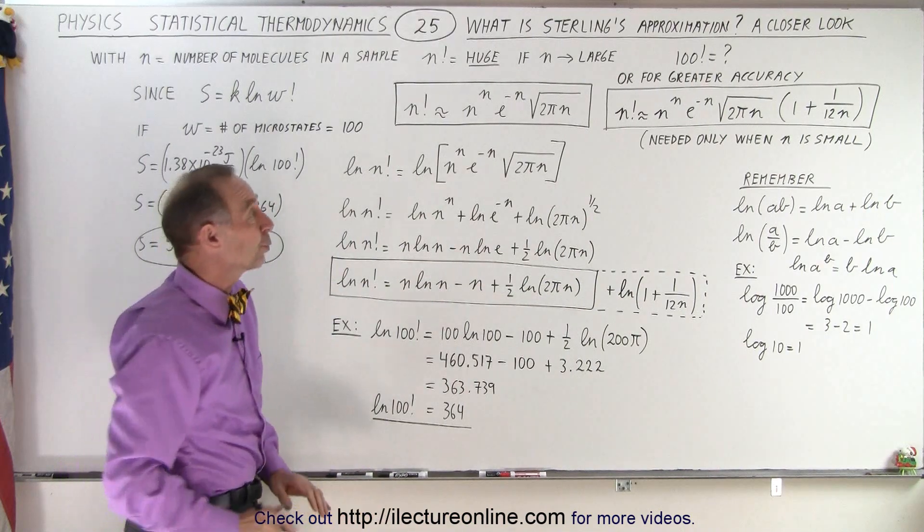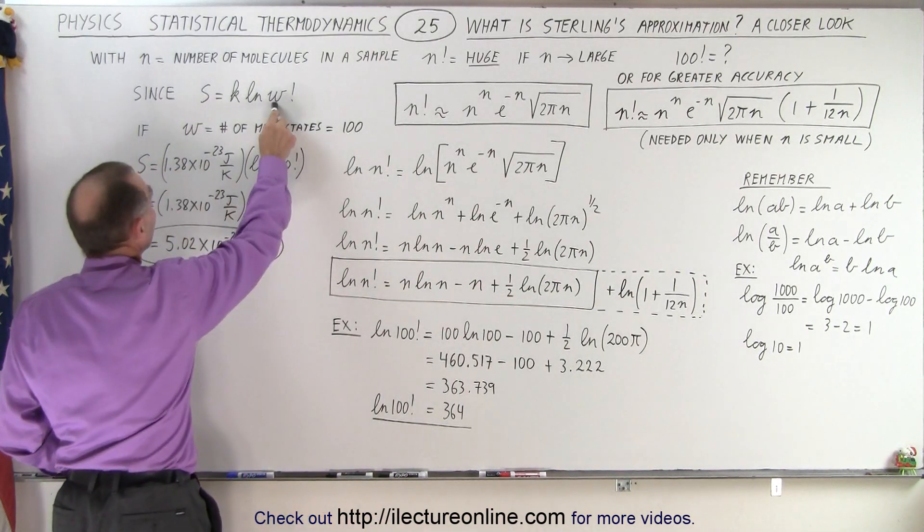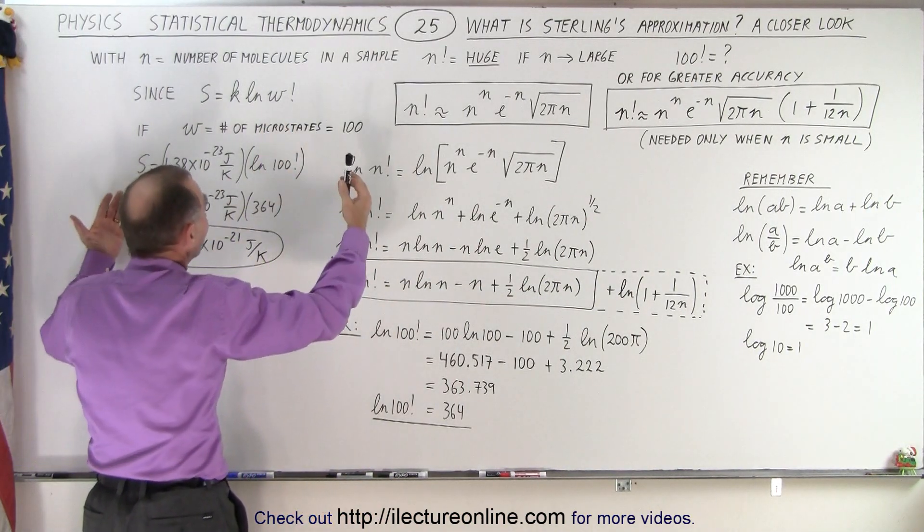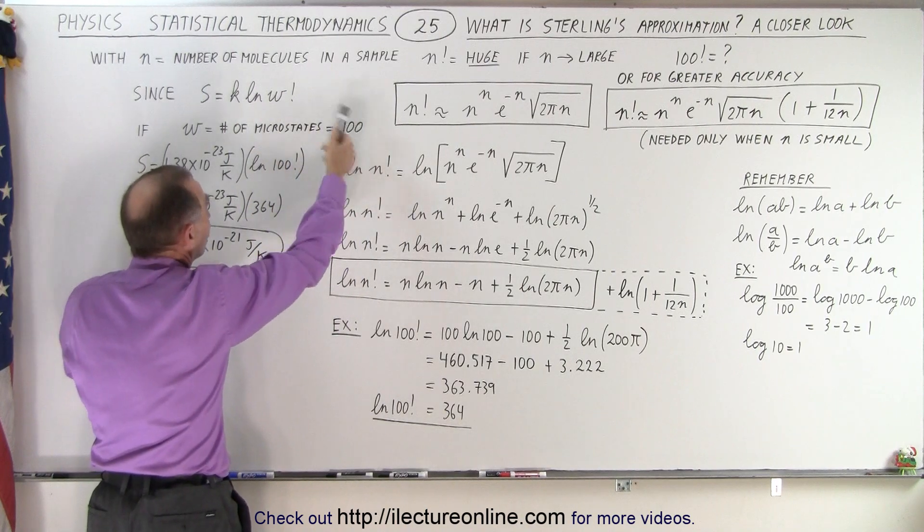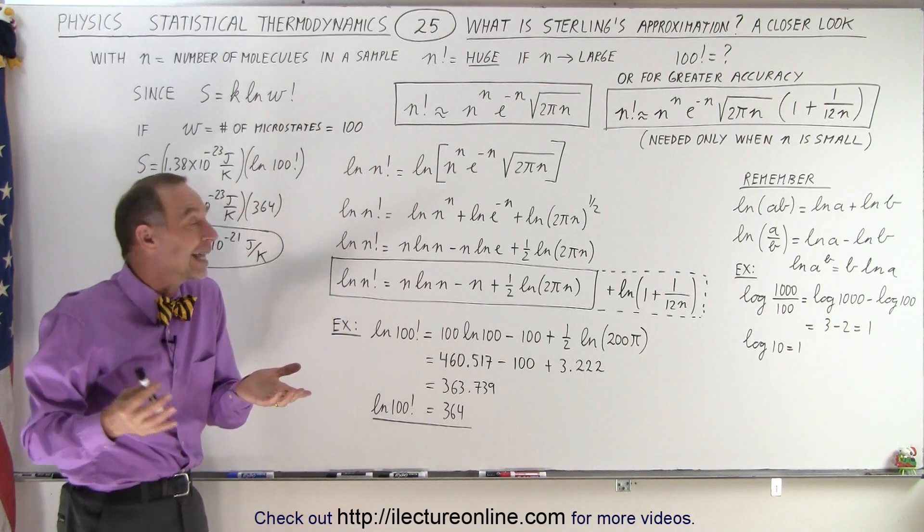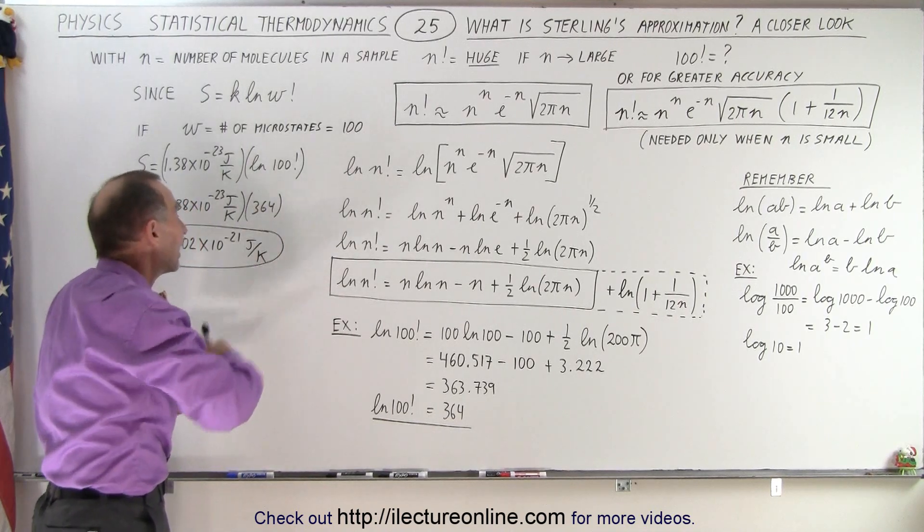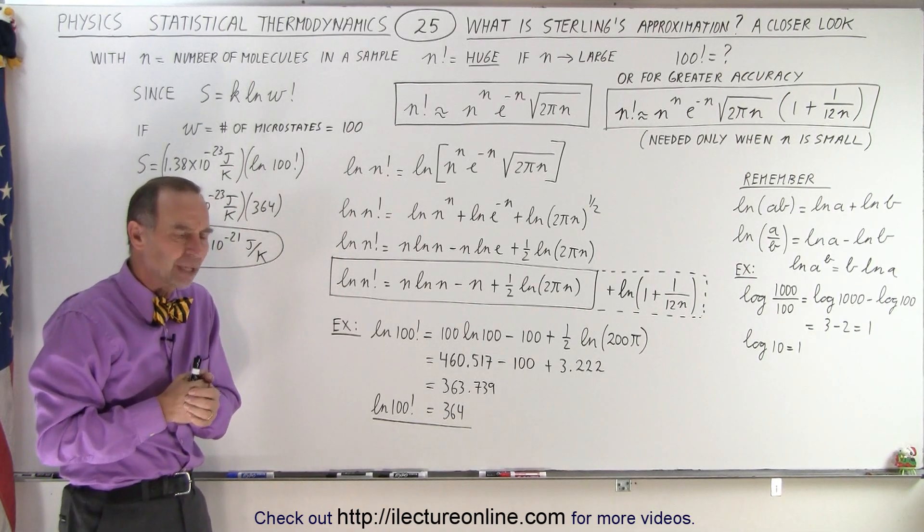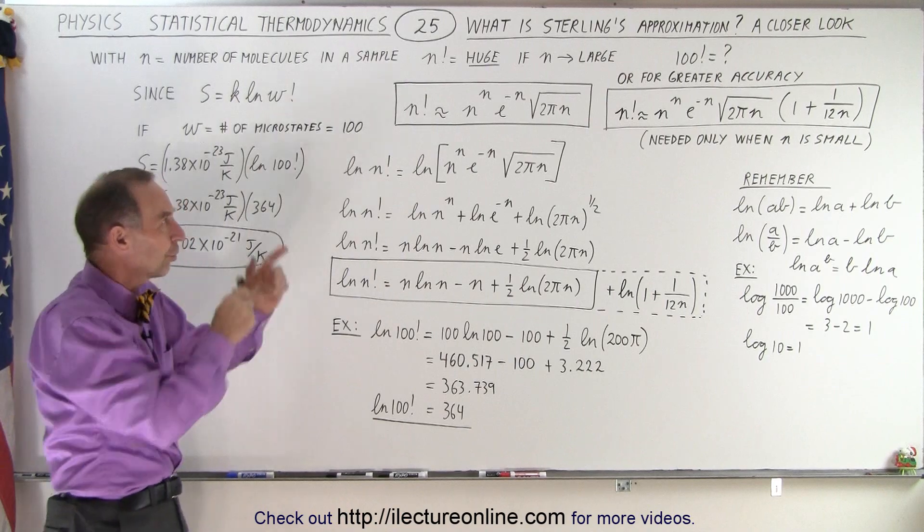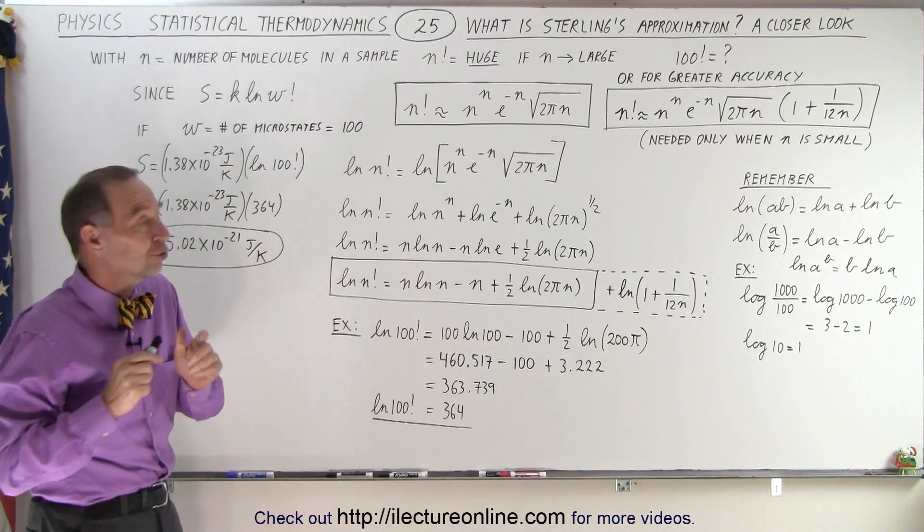let's say you're trying to find 100 factorial. Try it on your calculator and it won't work. And of course, w represents the number of microstates. So if the number of microstates reaches 100, how do you calculate the 100 factorial and then you want to take the natural log of that? How do you do that? Well, Stirling's approximation is what you need.